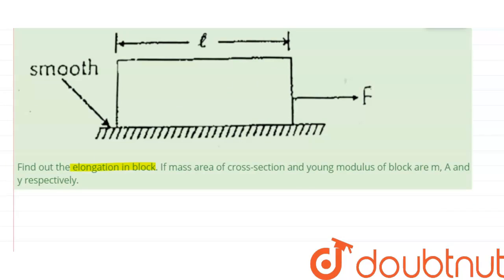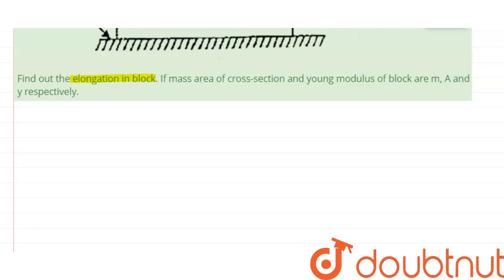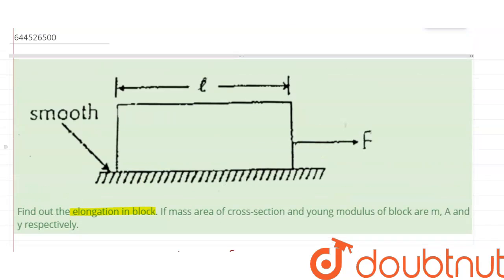Since there is no friction or any other external force, the acceleration is given by f upon m, and that is constant. So acceleration equals f upon m. Now, to find out the elongation in this block, let me take a small element of length dx. This is the small element which has length dx.